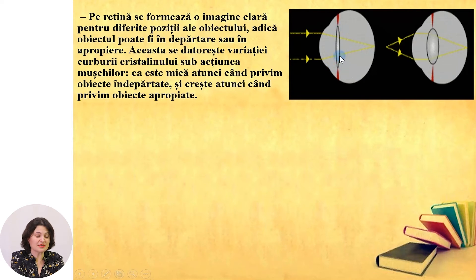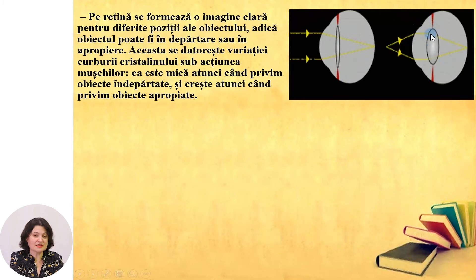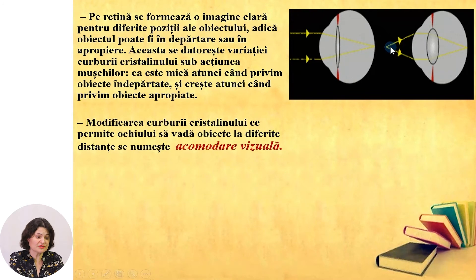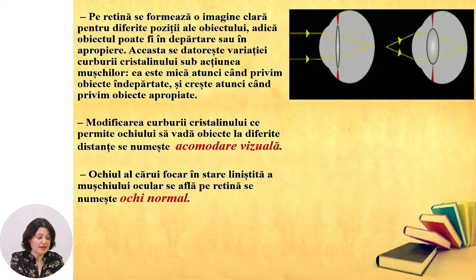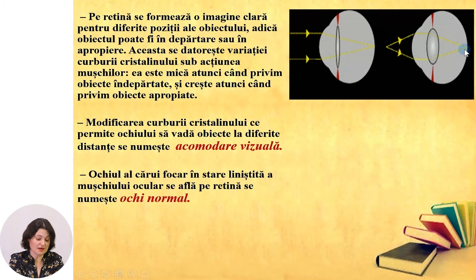The curvature of the crystalline lens is small when the object is far away, or larger when the object is nearby. This change in the curvature of the crystalline lens, which allows the eye to see objects clearly at different distances, is called visual accommodation. The eye whose focal point, in a relaxed state, forms on the retina is called a normal eye.